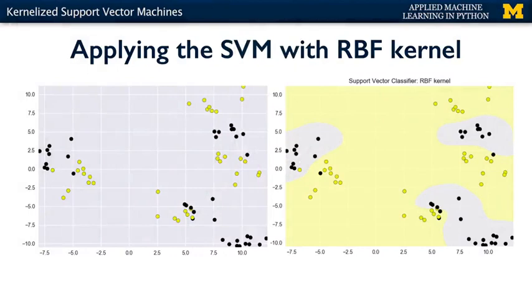Here's the result of using a support vector machine with RBF kernel on that more complex binary classification problem we saw earlier. You can see that unlike a linear classifier, the SVM with RBF kernel finds a more complex and very effective set of decision boundaries that are very good at separating one class from the other. Note that the SVM classifier is still using a maximum margin principle to find these decision boundaries. But because of the nonlinear transformation of the data, these boundaries may no longer always be equally distant from the margin edge points in the original input space.